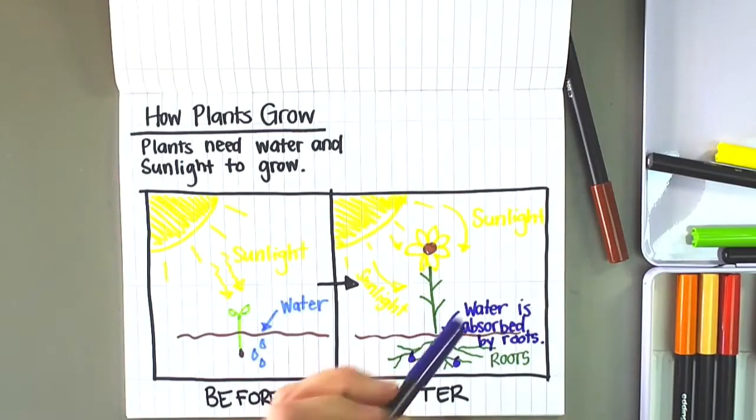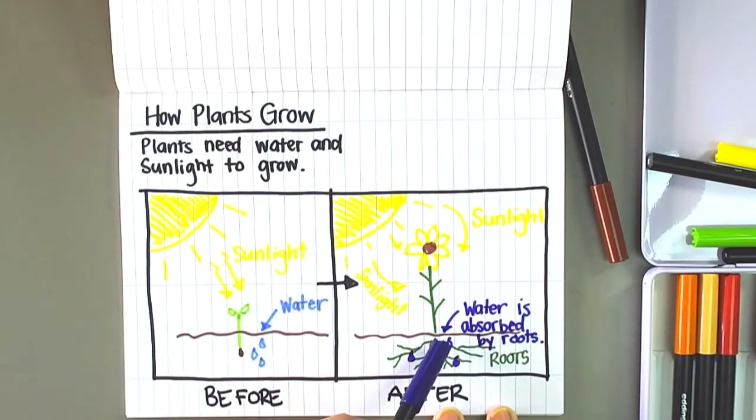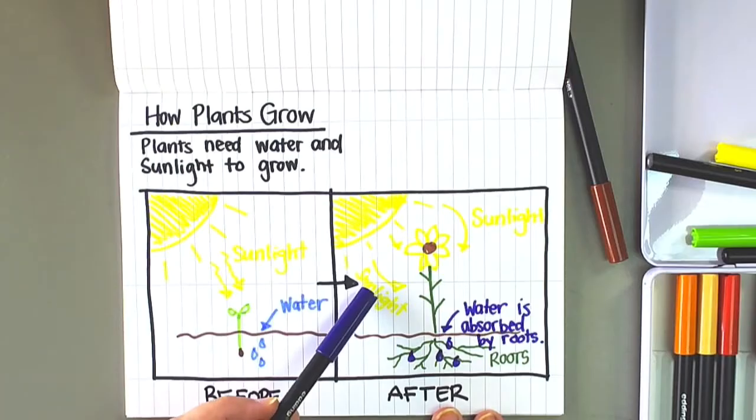I've added this explanation that water is absorbed by the roots. Sometimes our labels will be a little bit longer than just one word, but sometimes our labels are just one word.